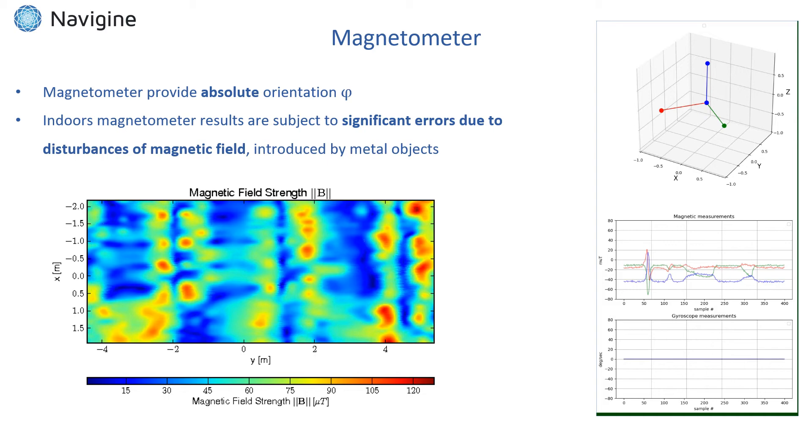Here we start the test by rotating the device on the table, which results in the change of magnetometer readings and non-zero readings from gyroscope. Then device is returned to initial state and is kept motionless, which is indicated by zero readings from gyroscope. But at the same time we bring a metal object close to the device, which as one can see leads to a significant change in magnetometer readings, despite the fact the device is still motionless.